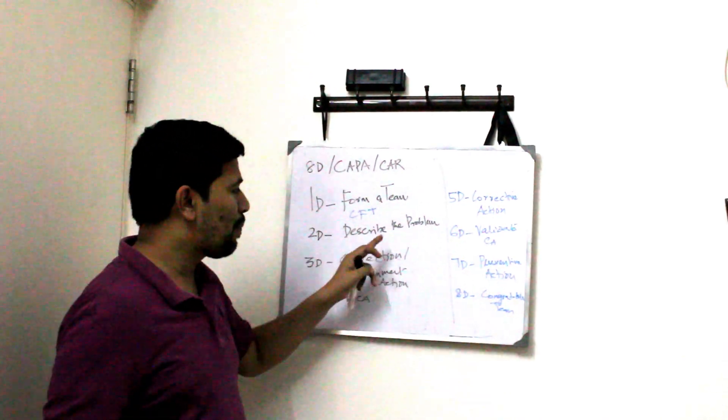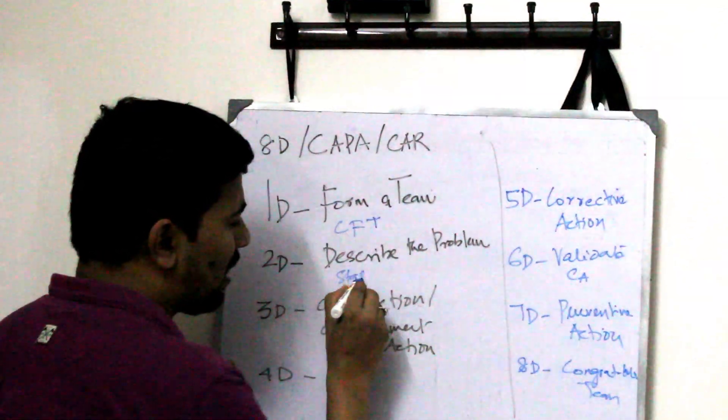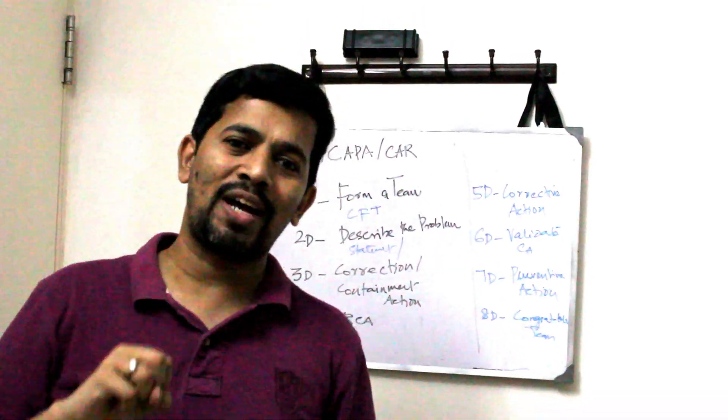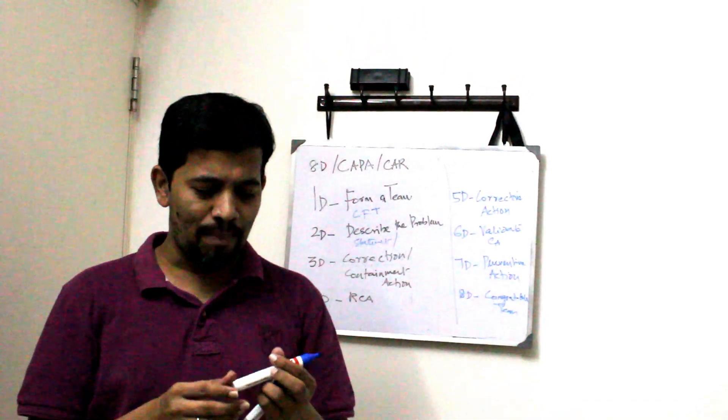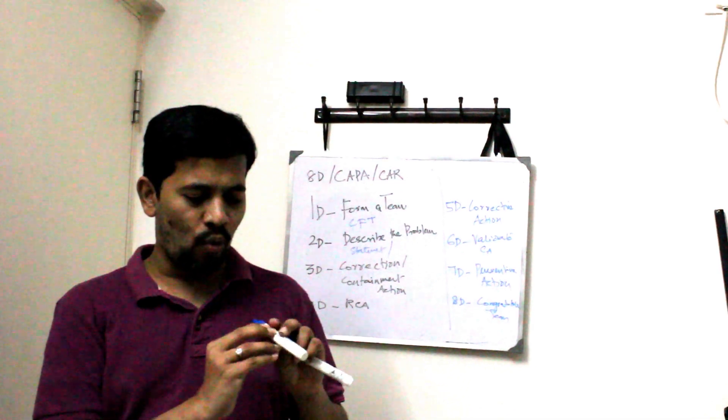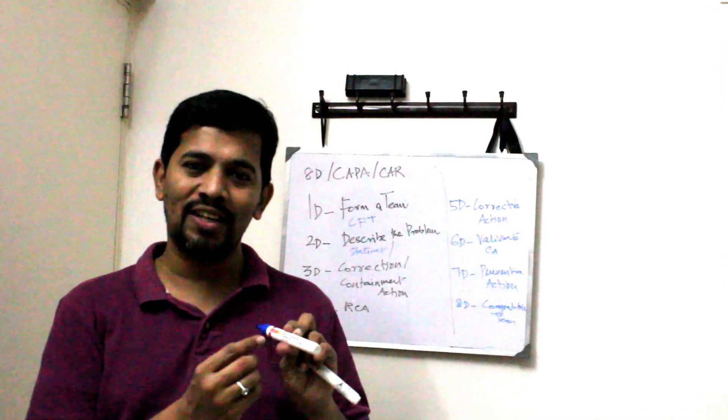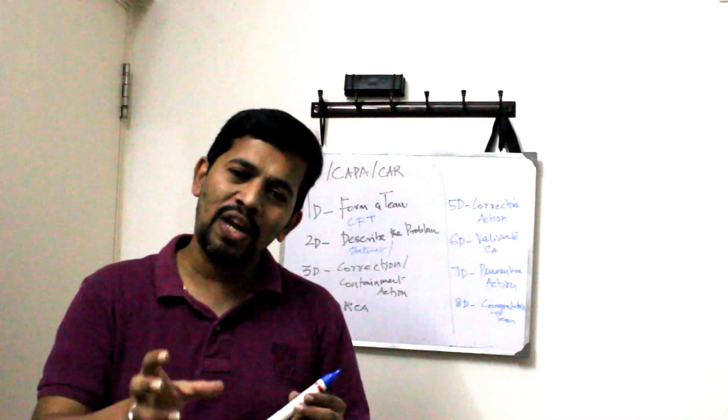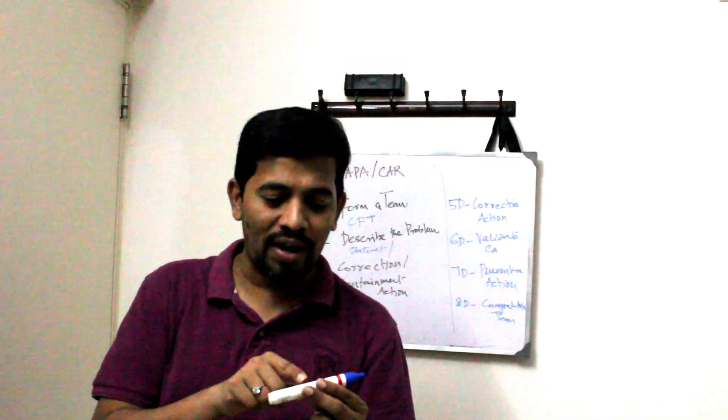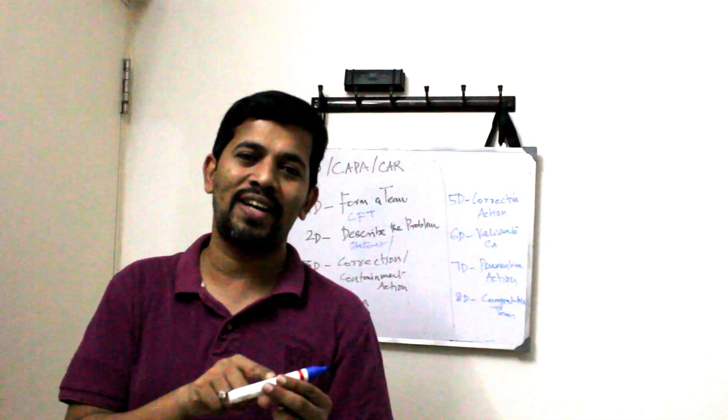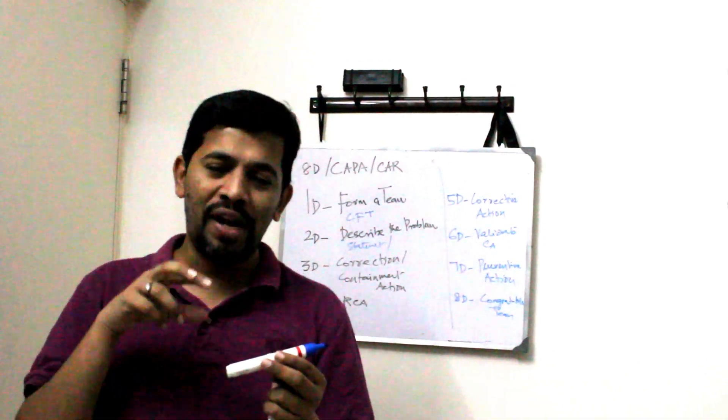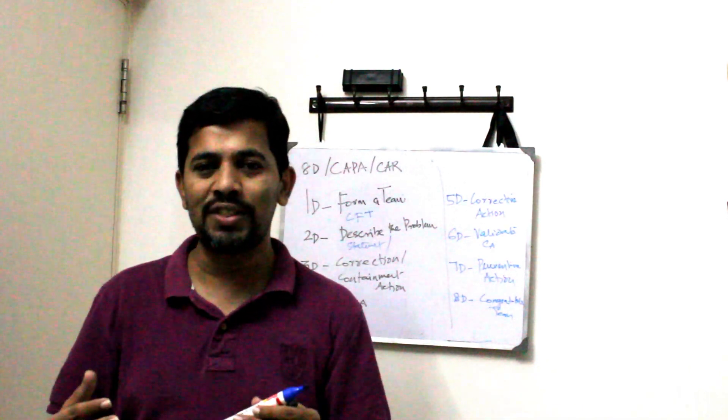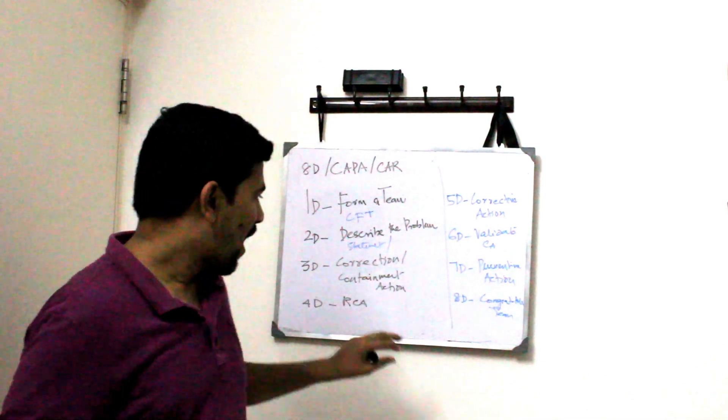So to describe the problem what we do is first you pick up the statement given by the customer. And then from there you can add more factual words. For example the customer complaint is marker does not have white fonts. The letter, the word white is not there, that describe the problem. So then you can add more reference to it. When that marker, what is the part number, when did it happen, when the customer complaint was received, all that you can add the factual words in the description.